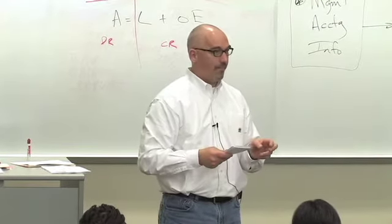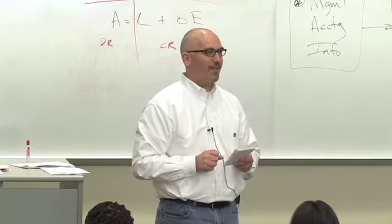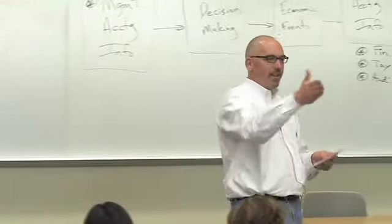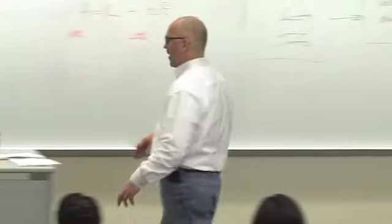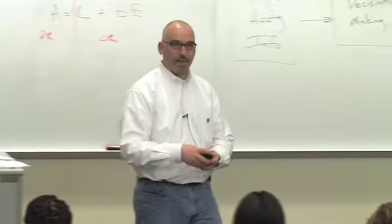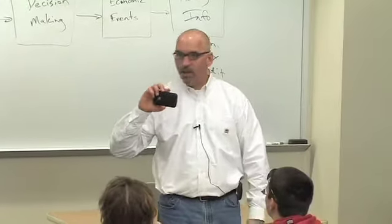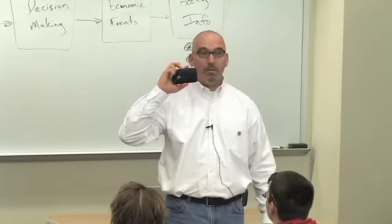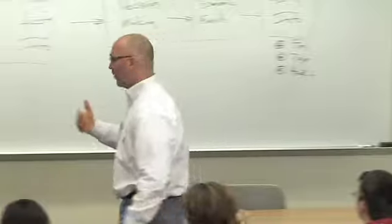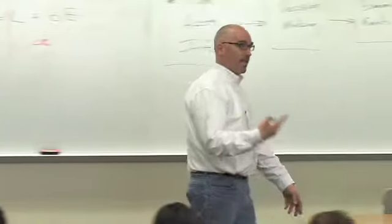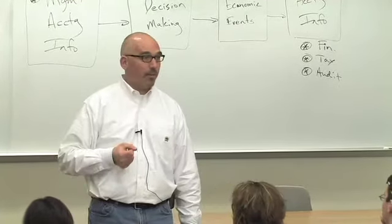Christy, what about the balance sheet? What's the implied words? As of. As of the date. Because it's just like — I could turn on my iPhone and take a picture. As of this day, this time, who was in class, how many people were here? And that's what a balance sheet communicates — as of a particular date and time, what assets, liabilities, and owner's equity did the company have in its possession?